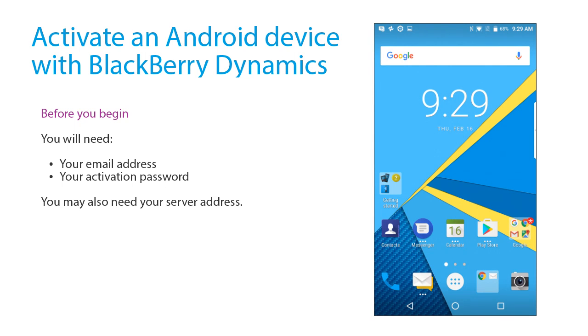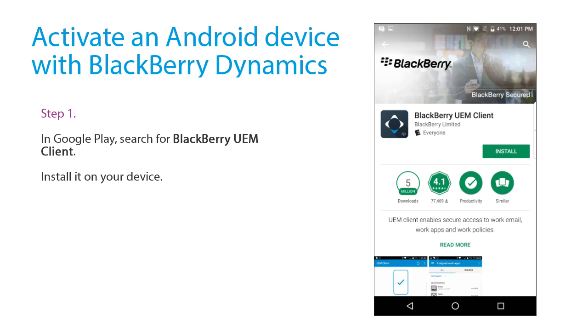Activate an Android device with BlackBerry Dynamics. You will need your work email address and the activation password that your administrator sent to you.